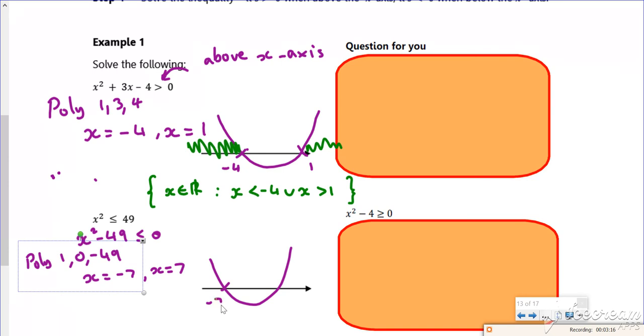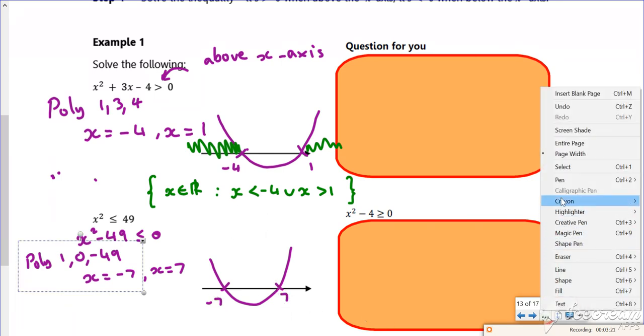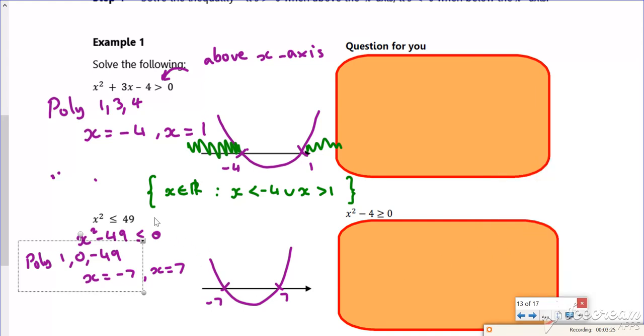So -7 and 7, now I just need to identify the region. So I'm looking below this time. If you look where the graph is below the x-axis...